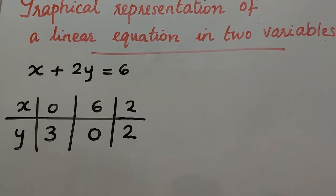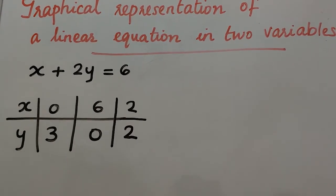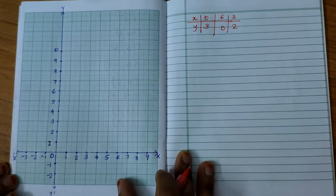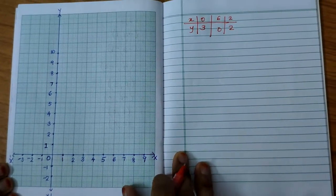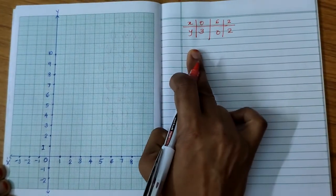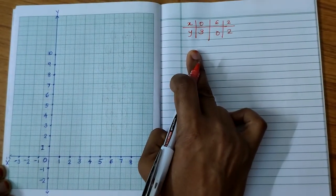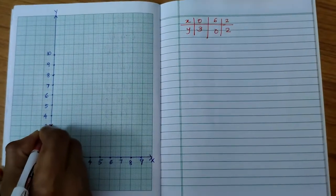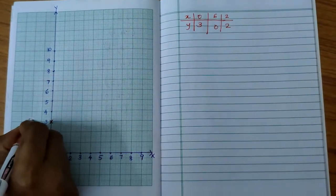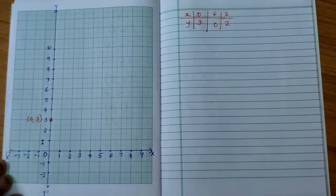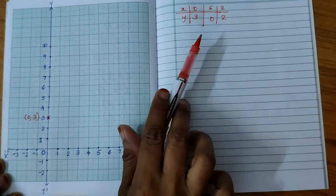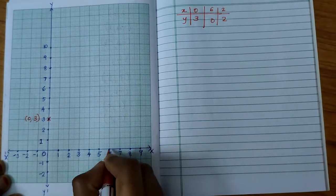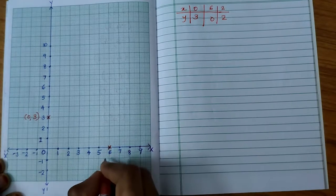Here I found three solutions and we are going to draw the graph. First solution is (0, 3). 0, 3 means it will lie on y axis. This point is (0, 3). Next solution is (6, 0). 6 lies on x axis. So 6, 0 is this point.